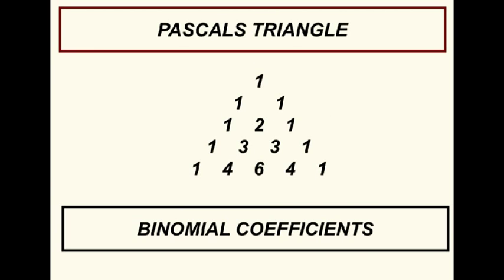Pascal's triangle is shown here. Each number is the sum of the two numbers immediately above it. Each row contains the sequence of binomial coefficients needed for a binomial expansion.